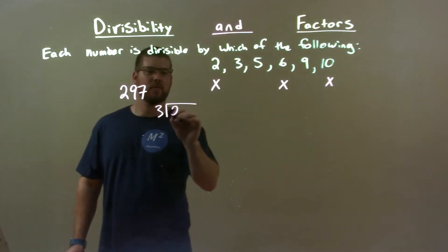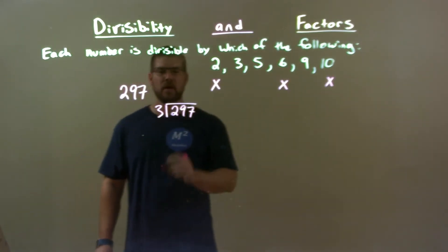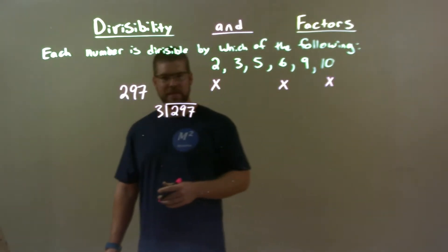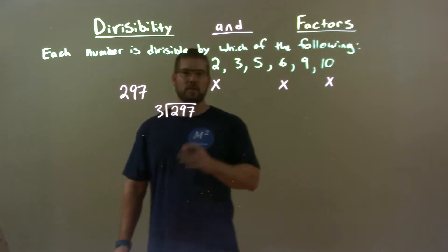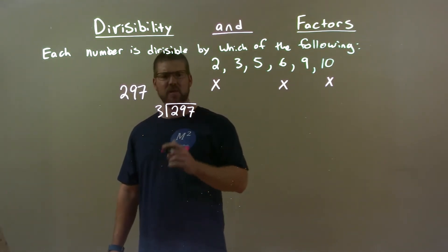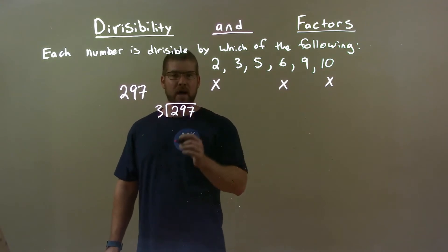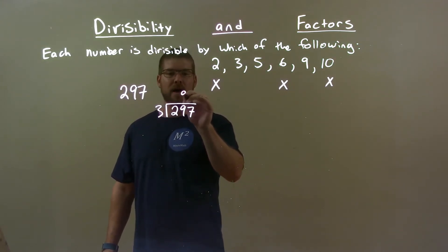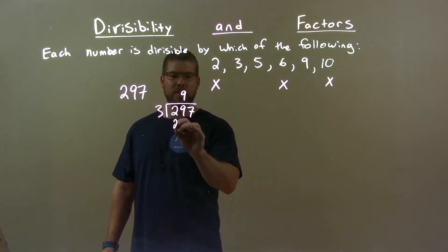Does 3 go into 297? Well, 3 does not go into 2 at all, but 3 can go into 29. 3 goes into 29, that's going to be 9 times, right? 9 times 3 is 27.